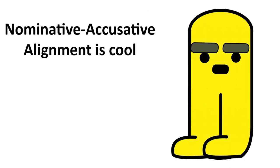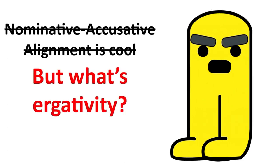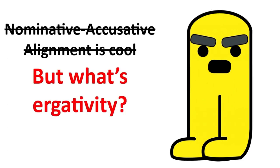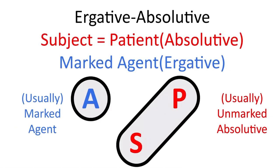So you may think to yourself, hey, nominative-accusative alignment is cool and all, but what's ergativity? Well, in the exact same way that nominative-accusative languages will group the subject and the agent together in the nominative case and will mark the patient, ergative-absolutive languages, or just ergative languages, will treat the subject and the patient alike in the unmarked absolutive case and will mark the agent in what's called the ergative case.